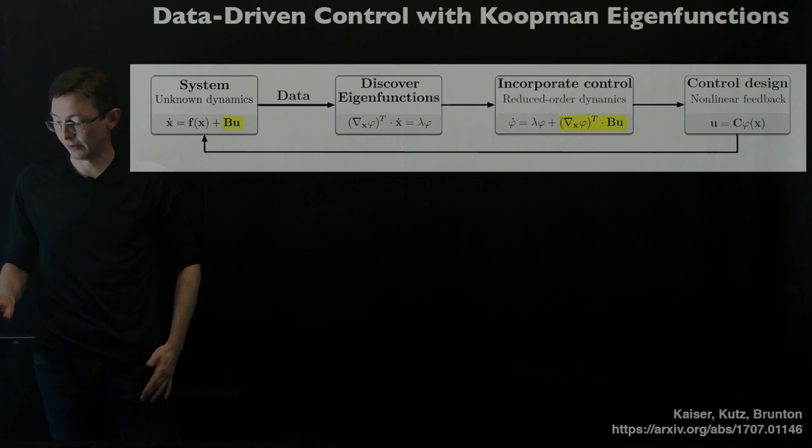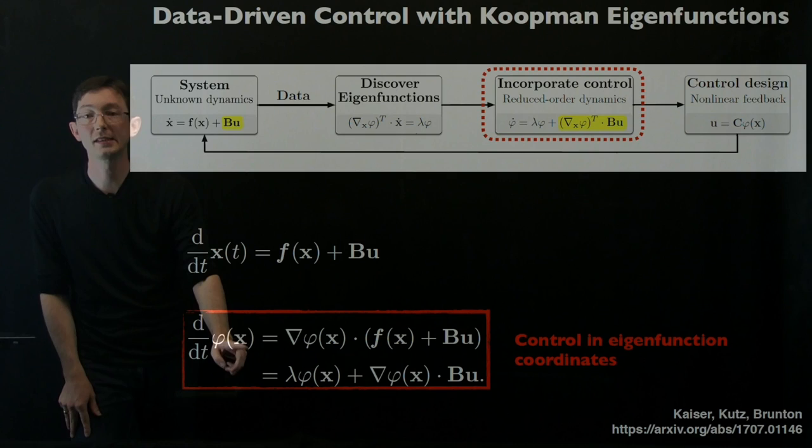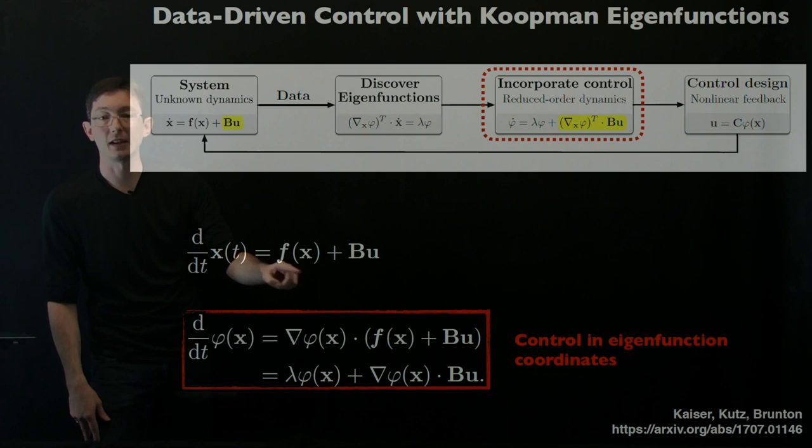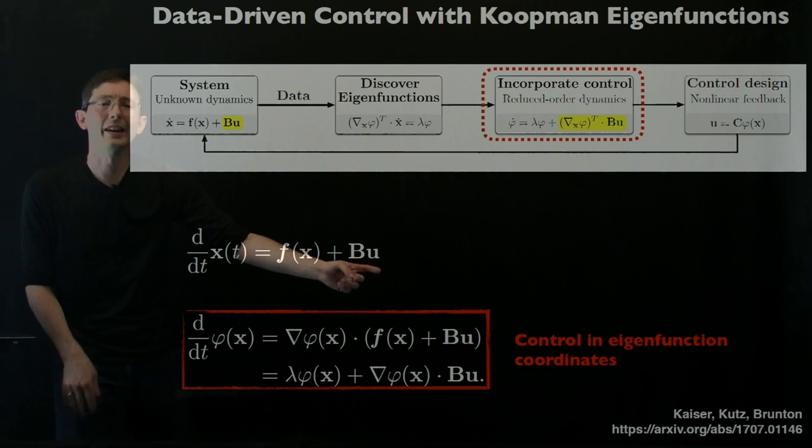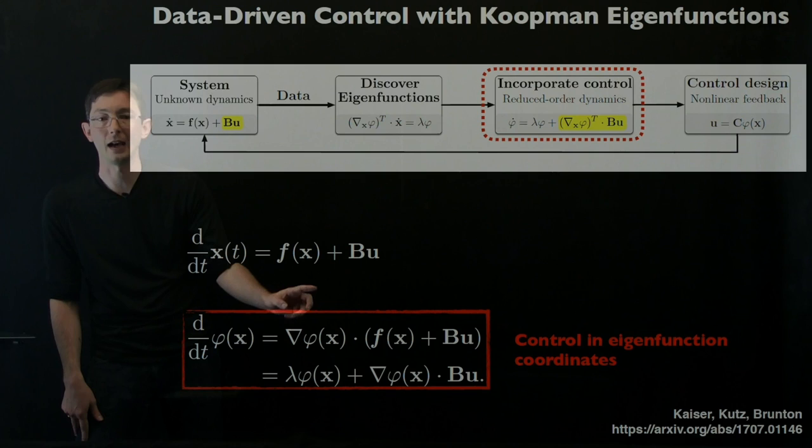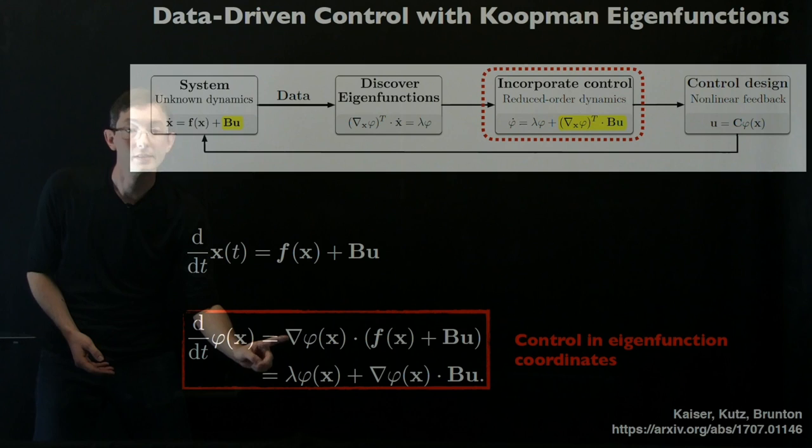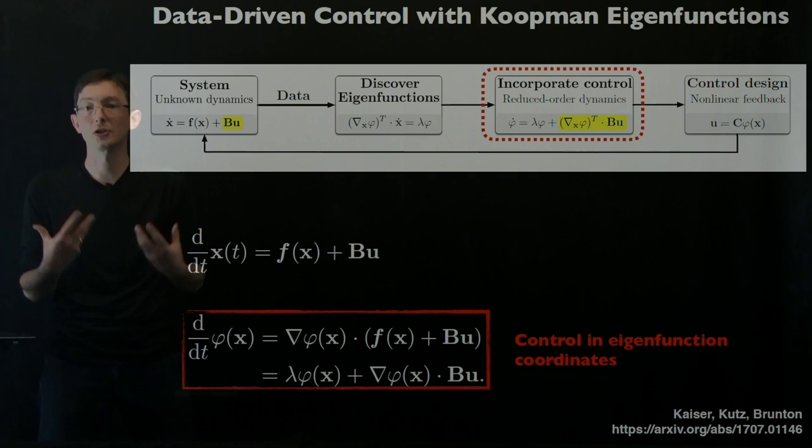This is based on that basic generator equation before, that PDE for Koopman eigenfunctions. Now we're going to take DDT of phi, we still get grad phi times x dot, but now x dot is not just an autonomous dynamical system, it has a control input plus BU. You could make this more general, you could make it nonlinear control, but I just want to have this additive control because it's easier to see what happens. I take the chain rule and I get phi dot equals grad phi times f of x plus BU. If I didn't have any control, if I just had this unforced system, I would have these eigenfunctions phi. So grad phi dot f is just lambda phi. Remember, these are eigenfunctions of the unforced system. And then I have this correction term because of my control input.